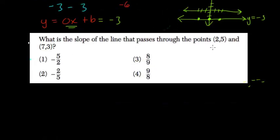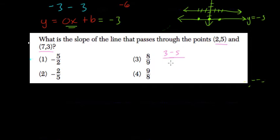Okay, what's the slope of a line that passes through these two points? Well, slope is delta y over delta x, so we subtract our y's — 3 minus 5 — and that's over our x's, our difference of our x's: 7 minus 2.